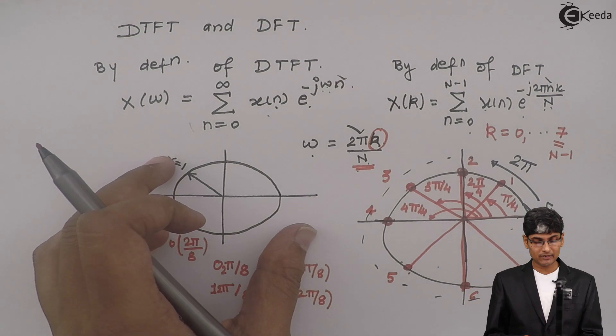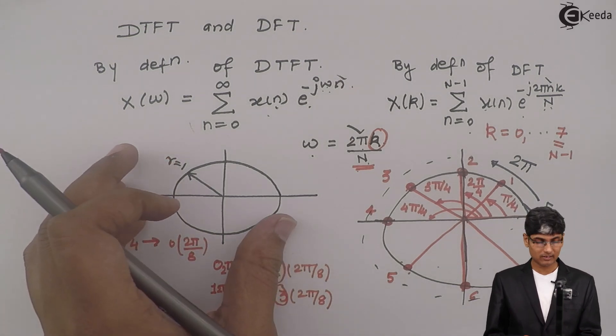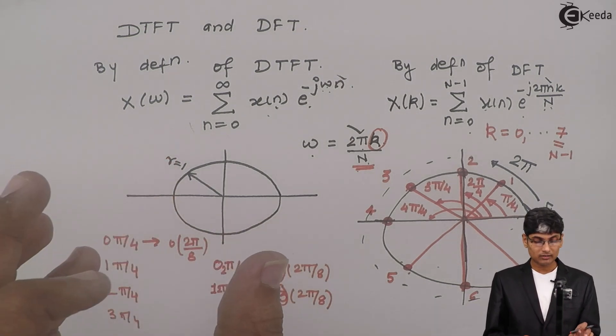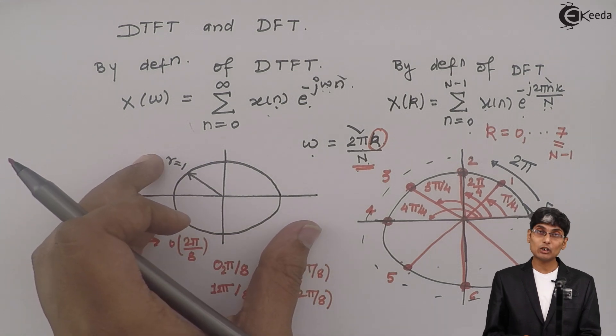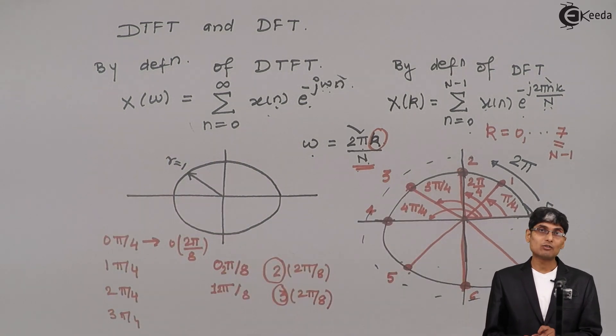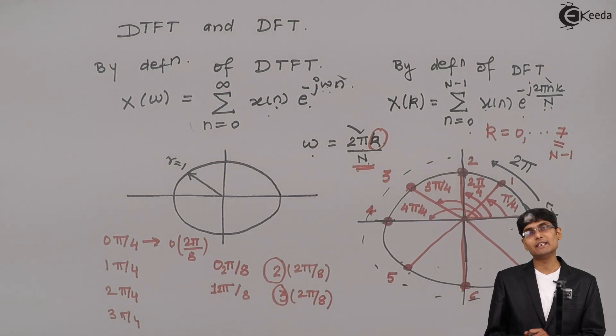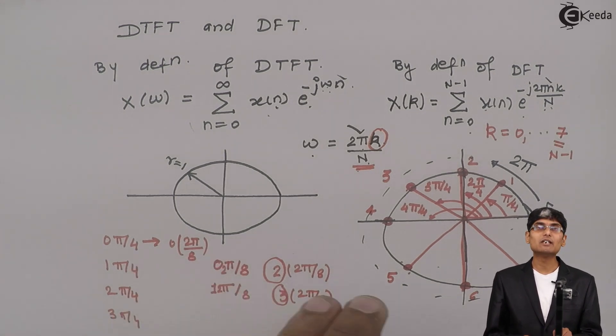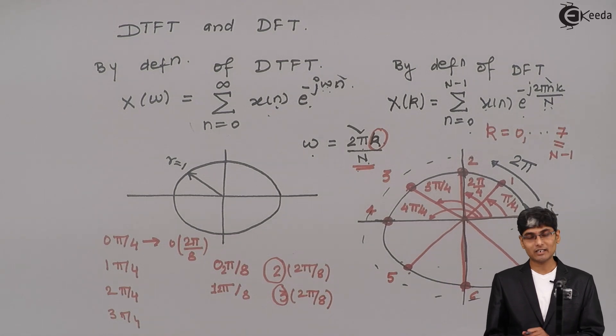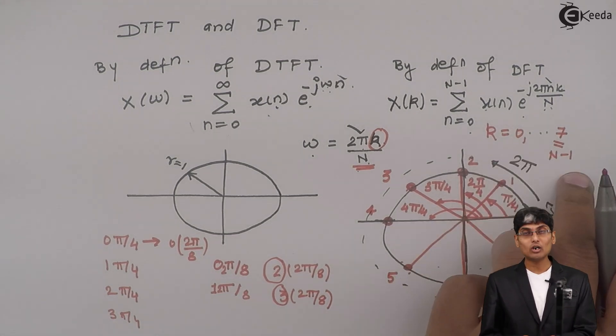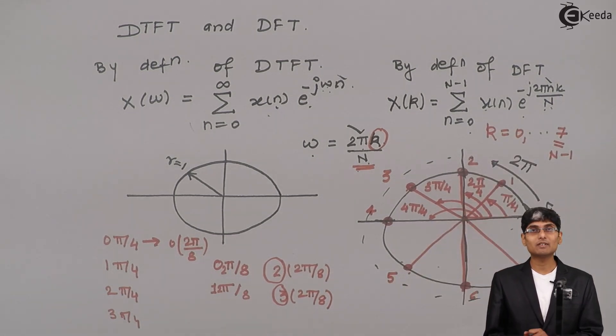So if I chop up a frequency response or sample a frequency response, or sampling of an omega domain gives you DFT. So DFT is frequency sampled version of DTFT. That is the basic relation between DTFT and DFT: that DTFT omega is continuous, DFT omega is discrete, and the limits is 0 to N-1. Thank you.